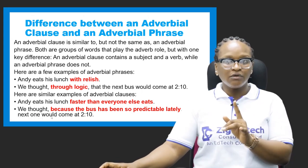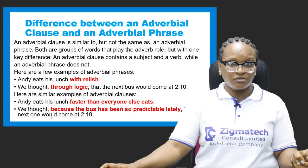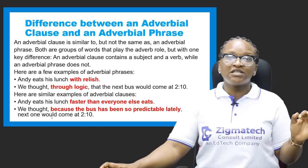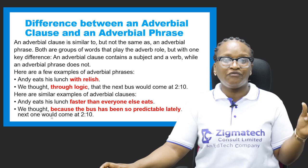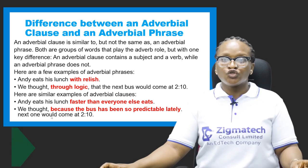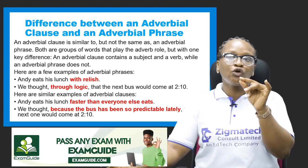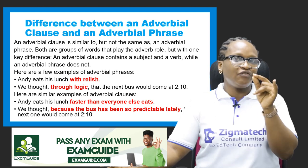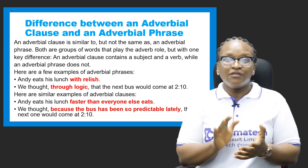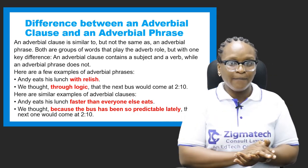An adverbial clause is similar to, but not the same as, an adverbial phrase. They perform the same function and start with the same adverb. The only clear difference is the presence of a finite verb. Both are groups of words that play the adverb role, but an adverbial clause contains a subject and a verb, while an adverbial phrase does not. Their shared function is to modify the verb in the main clause.